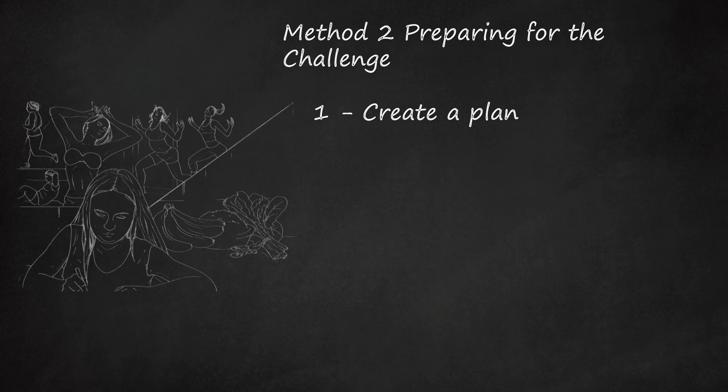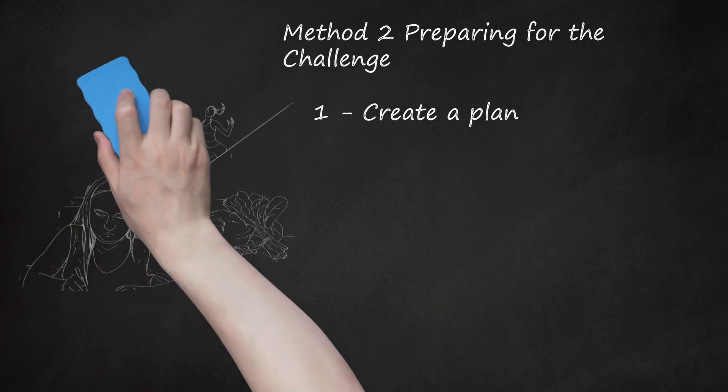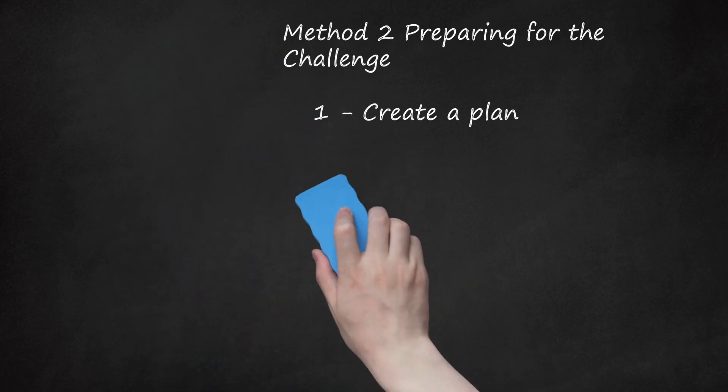For example, imagine your goal is to write a novel in 16 weeks. Your steps might be to come up with a concept, develop an outline, draft each chapter, edit and revise each chapter, and then copy edit the manuscript.